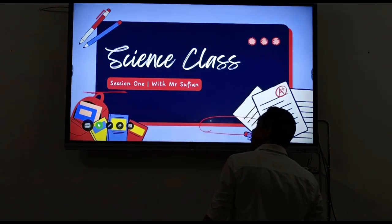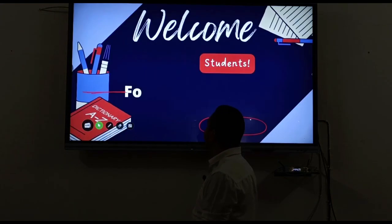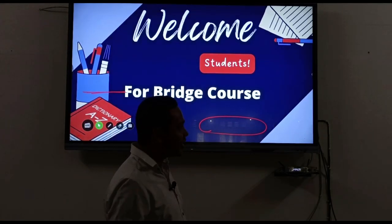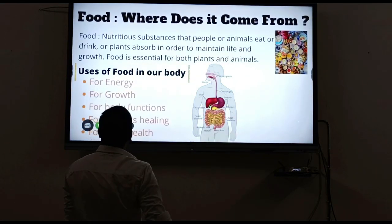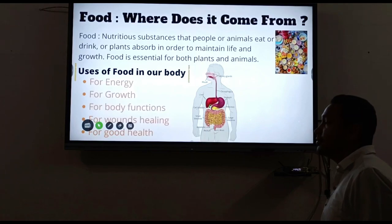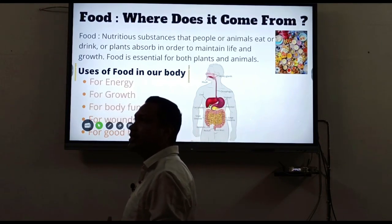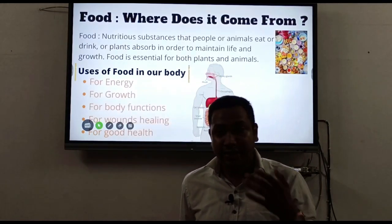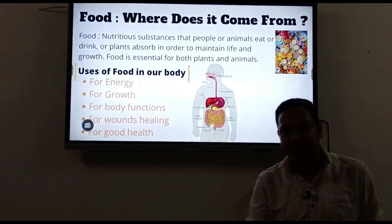This is session one of our science classes. Welcome, dear students, to the bridge course. Today we are starting the first chapter: Food - Where Does It Come From? All living beings - humans, plants, and animals - need nutrition in their body for their survivability.